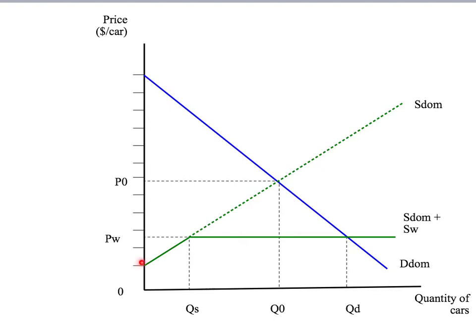But if the price goes up to P w, well, at that price of P w, we can buy as many cars as we'd like from overseas. That's our price taker assumption. So the supply curve for Australia, the supply curve of cars, now follows the domestic supply curve until we hit the world price. But then at the world price, it now becomes horizontal because we can buy as many cars as we'd like at the world price. So this solid green line is our total supply curve to Australia.